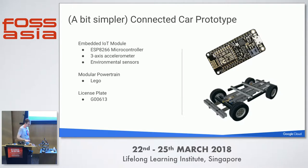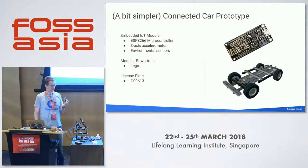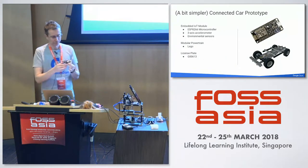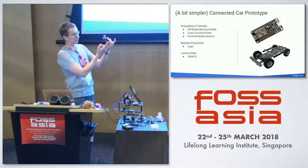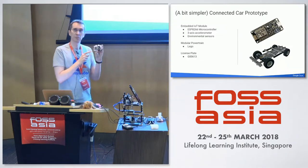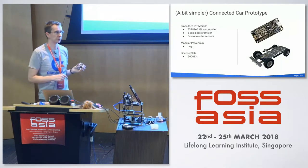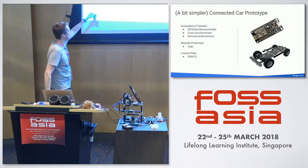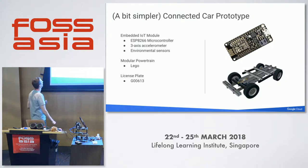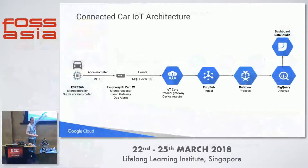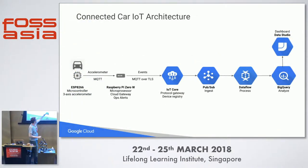This is the first real demo I will show you. I don't know how to build a Waymo car — it's a bit beyond my capabilities — so I built this. It's a connected car prototype for one of our automotive customers. I wanted to have a modular powertrain, so I used Lego. There's a modular powertrain here, and it has an ESP8266 microcontroller — a very simple $5 chip. There's an accelerometer, so it knows the position and g-forces in three axes: X, Y, and Z. Its license plate is G00613. It's connected securely — it goes through a gateway, this Raspberry Pi here — and has real-time analytics.